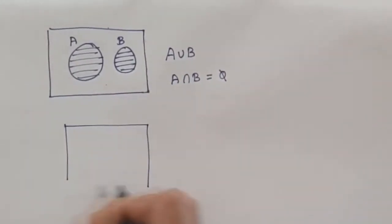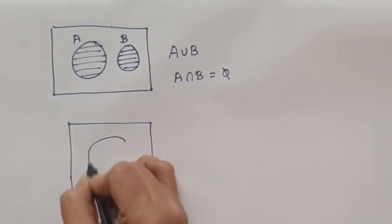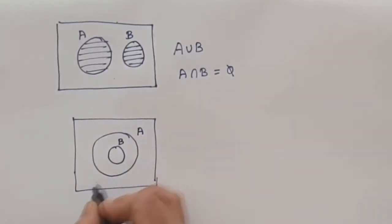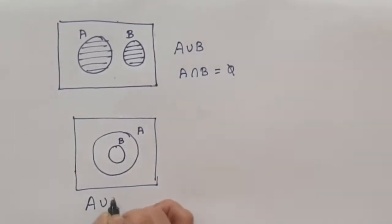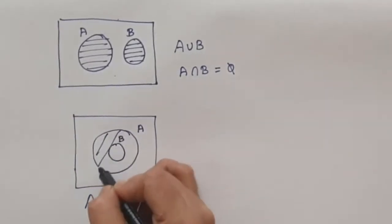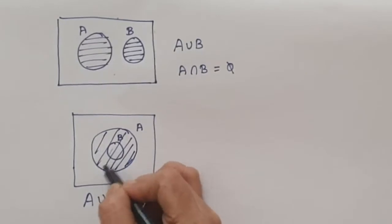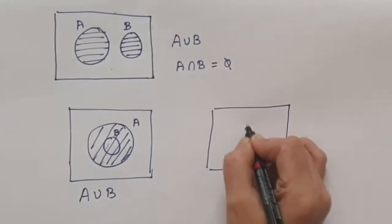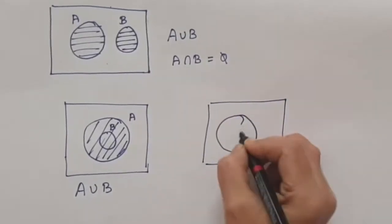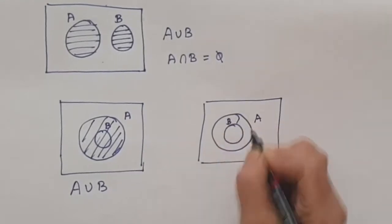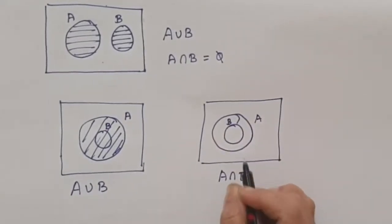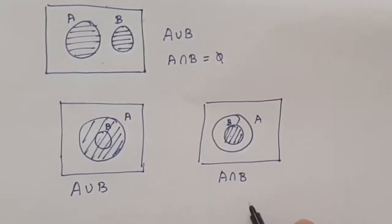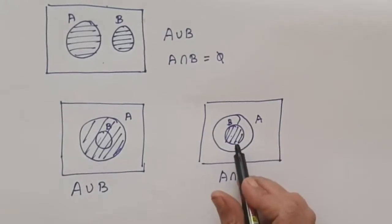Suppose if you have a set with circle A and B is a subset inside A. In this case, if you need to find A union B, we combine A and B. Wherever there is circle A, we shade it, so automatically it becomes the complete A. If you need to find the intersection, the common region for A intersection B is only B. So A intersection B is only B.